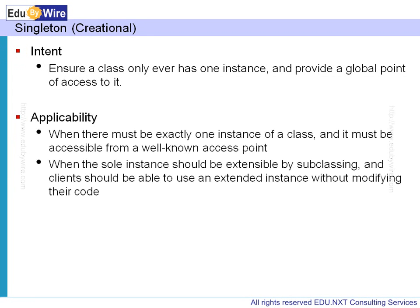When do you use this pattern? What is the applicability of the Singleton pattern? When there must be exactly one instance of a class and it must be accessible from a well-known access point, you should consider using the Singleton design pattern. Also, when the sole instance should be extensible by subclassing — if you remember the logger class, we made the constructor protected, so you can extend this class and override the constructor to do something different. The client should be able to use an extended instance without modifying their code, because the global point of access is defined by the parent class. In such cases, you should use the Singleton design pattern.